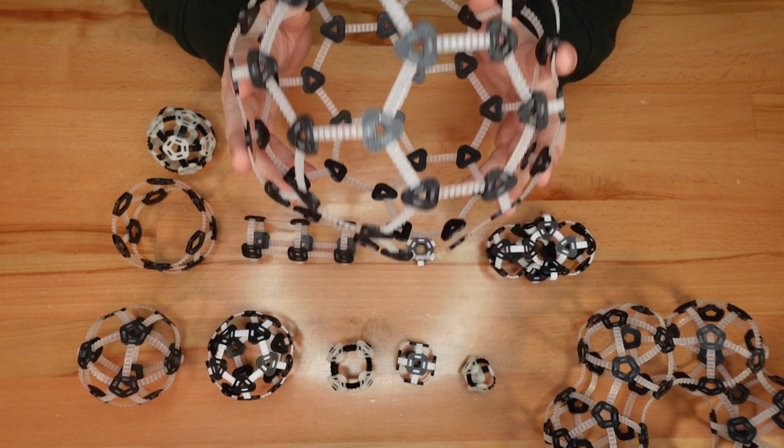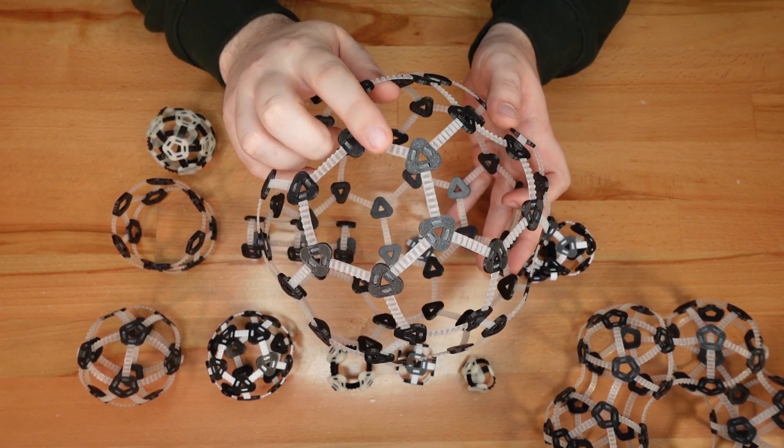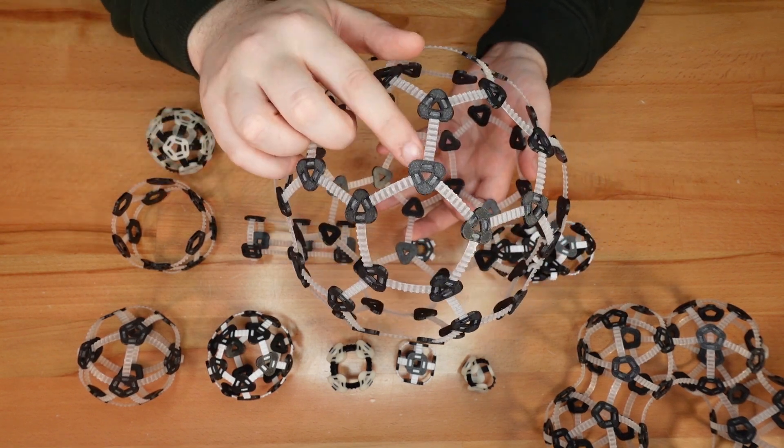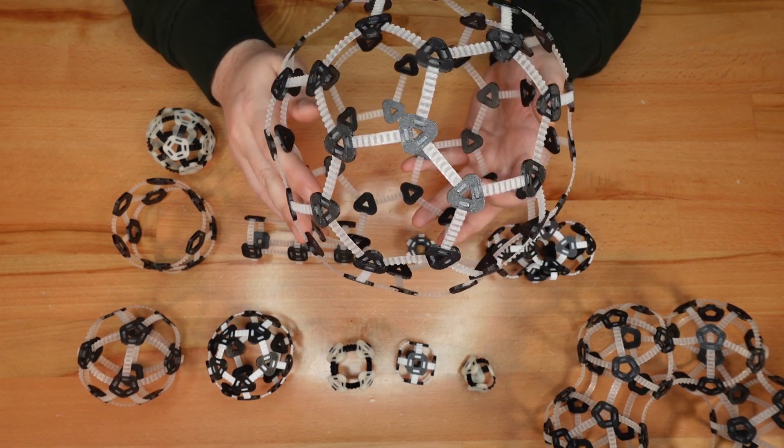If you want something stiffer, PETG also works well, especially for the longer length links. Save your PLA for the node connections, unless you plan on building something that won't undergo much stress.